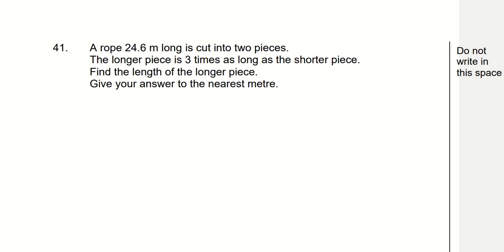Let's go about reading this question, following our strategy of race: read, annotate, choose and evaluate. Question number 41. A rope that is 24.6 meters long is cut into two pieces. The longer piece is three times as long as the shorter piece. Find the length of the longer piece. Give your answer to the nearest meter.